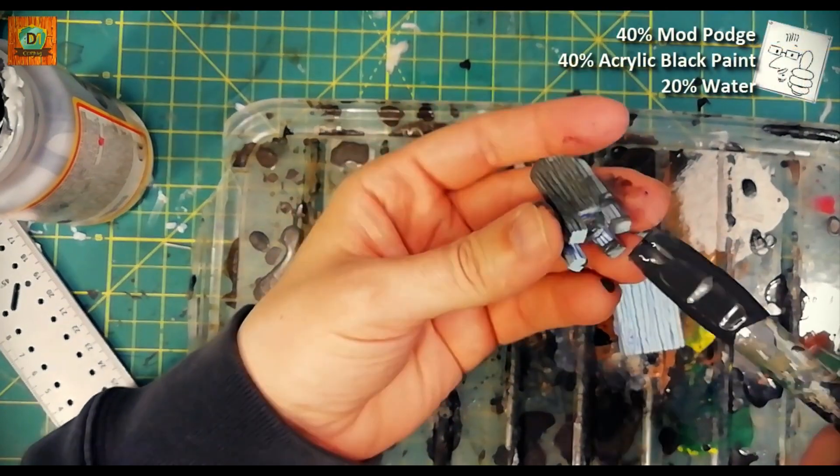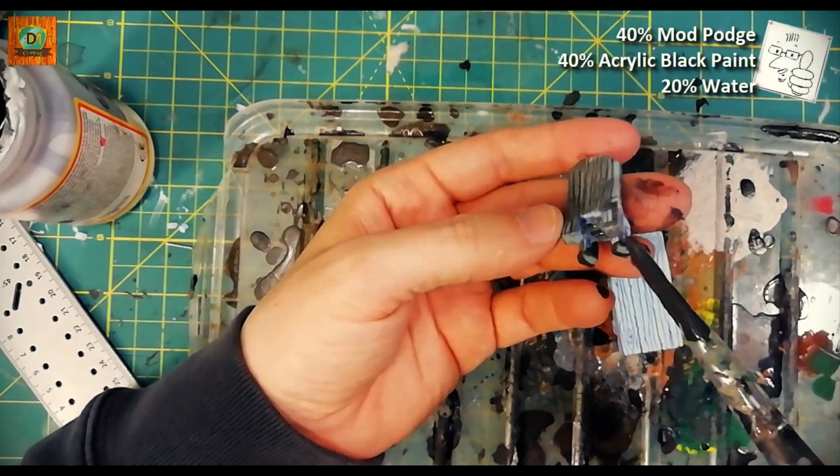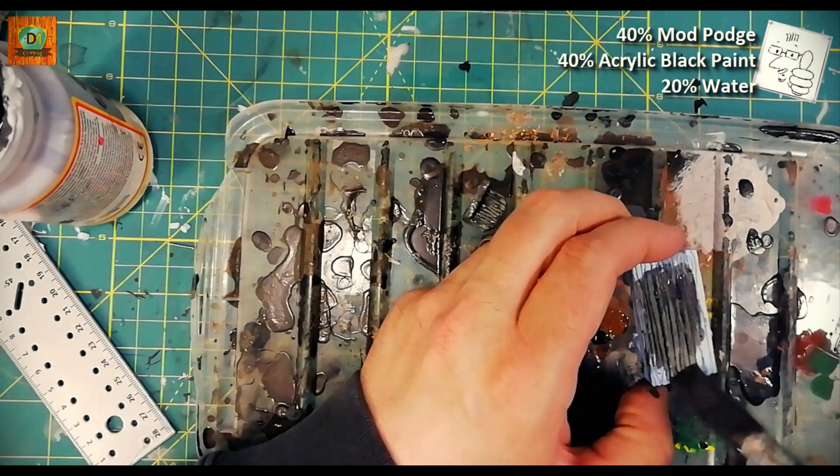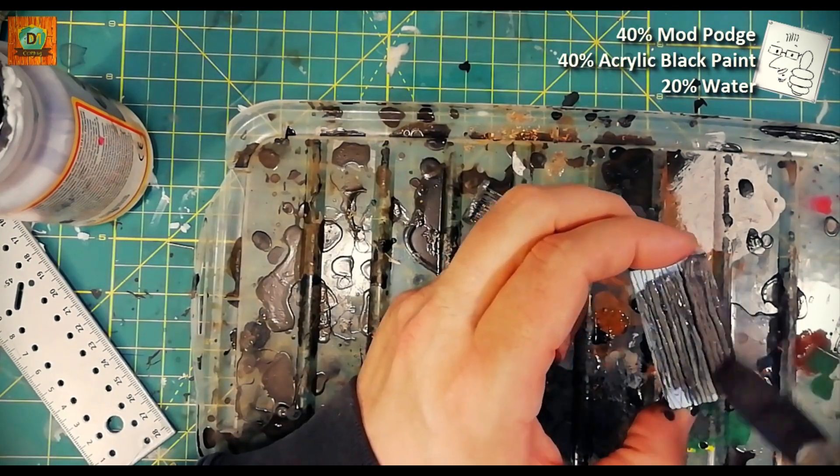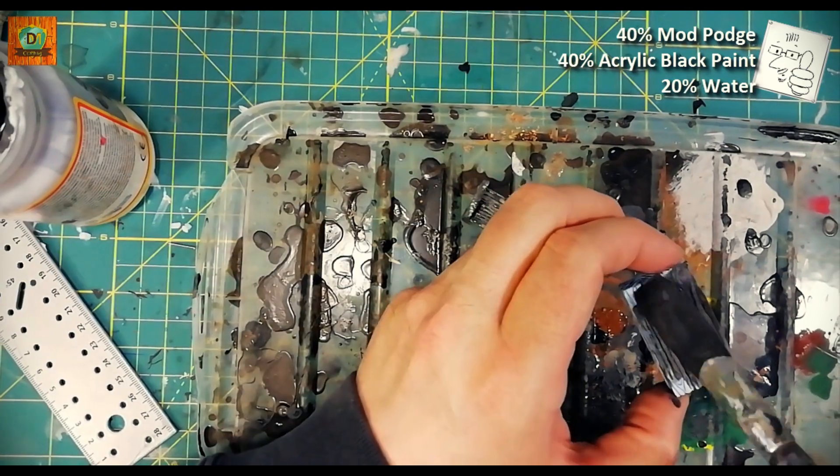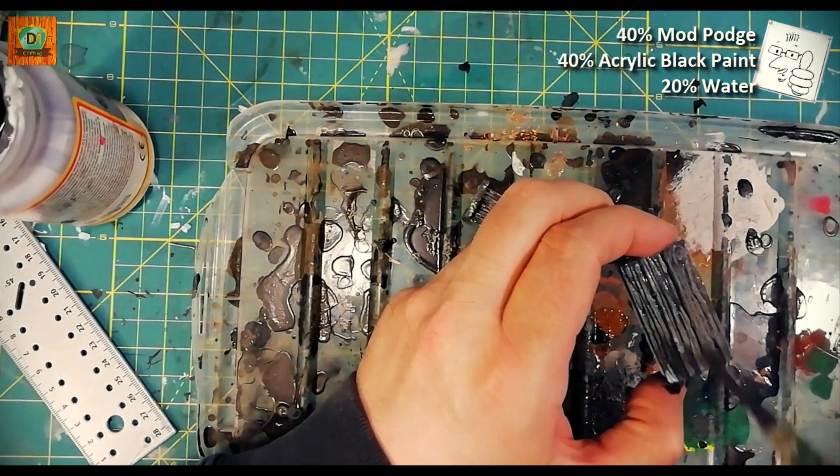Before painting, I'm covering all the pieces with a mix of acrylic black paint, water, and mod podge. This will give a lot of strength and protection to my piece.